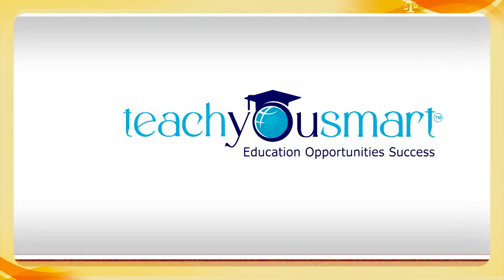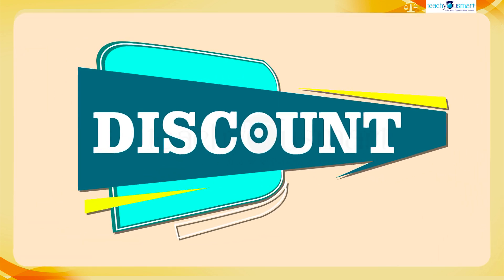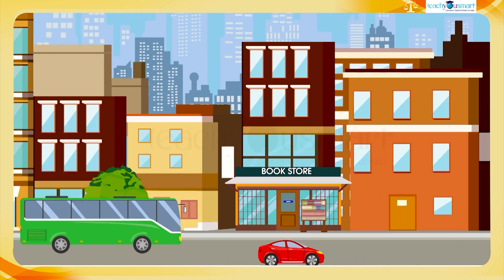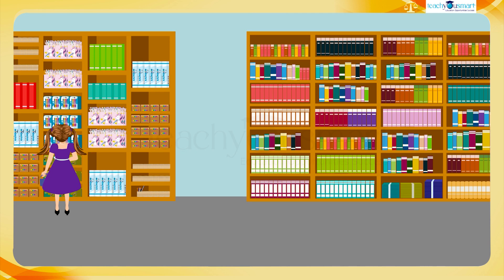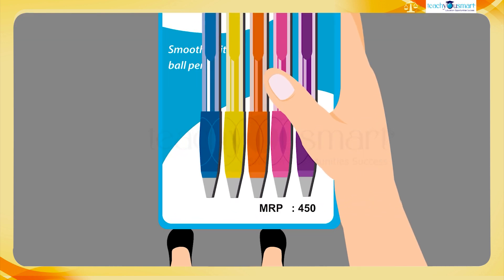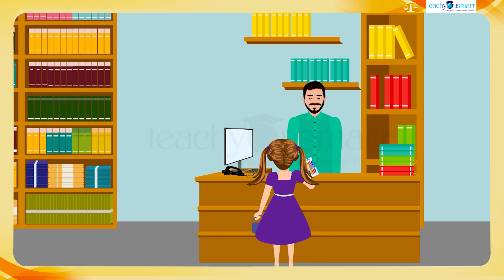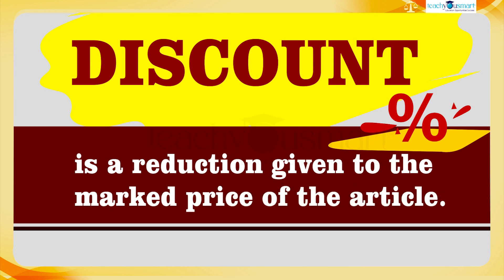Hello students, let's continue our journey through comparing quantities. Today we are going to a new topic, that is discount. Lana is a 13-year-old girl. One day she went to a store for buying a pen set. She chose a pen set and its marked price is 450 rupees, but the shopkeeper takes only 360 rupees. Yes, there was a reduction in the marked price — we call it discount. Discount is a reduction given to the marked price of the article.